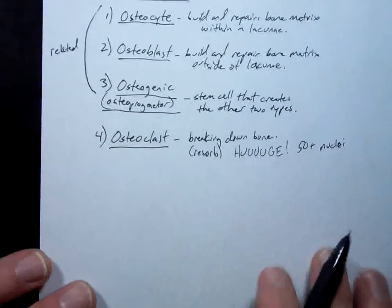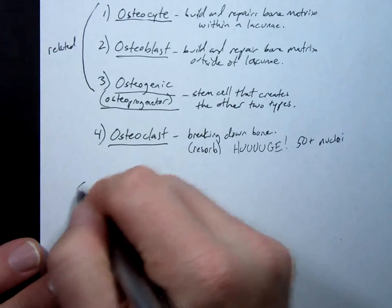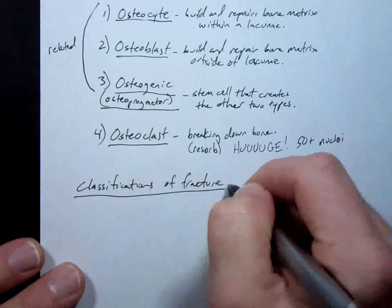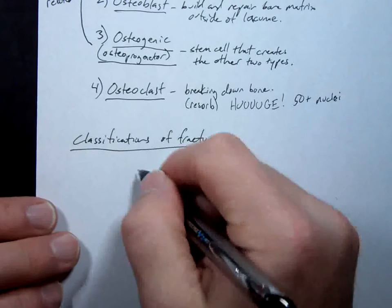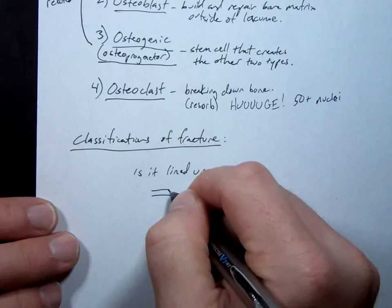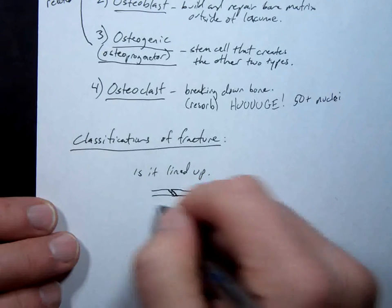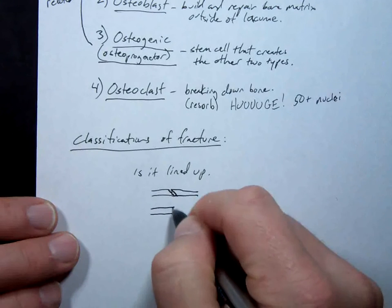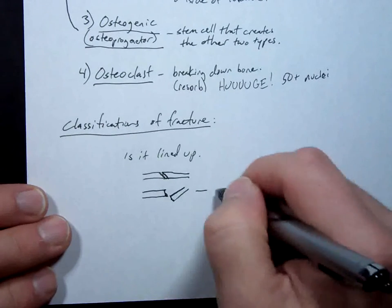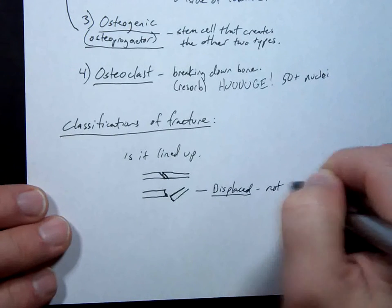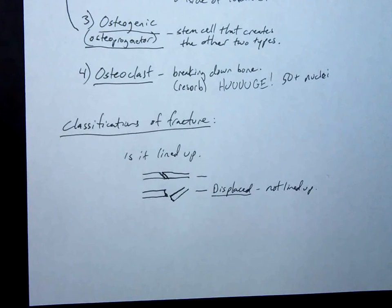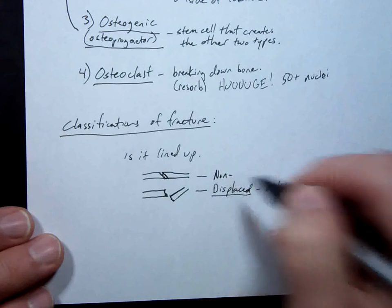Now, classifications of fracture. There are two questions you ask. One: is it lined up? Is the snapped part of bone still lined up where it's supposed to be, or is it not? If it's not lined up, this is called displaced. Logically the opposite should be 'placed,' but it's actually a double negative: it is non-displaced — either not lined up, or not-not lined up.